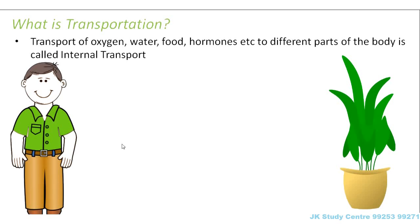Transport of oxygen, water, food, hormones, etc. to different parts of the body is called internal transport. It is known as internal transport because the transportation takes place within our body — it is not visible from outside. That is why it is called internal transport.